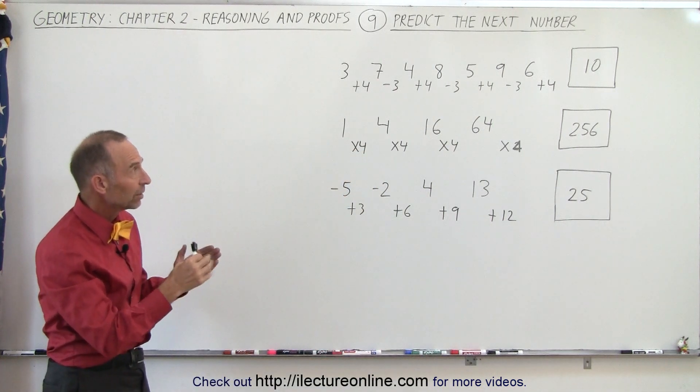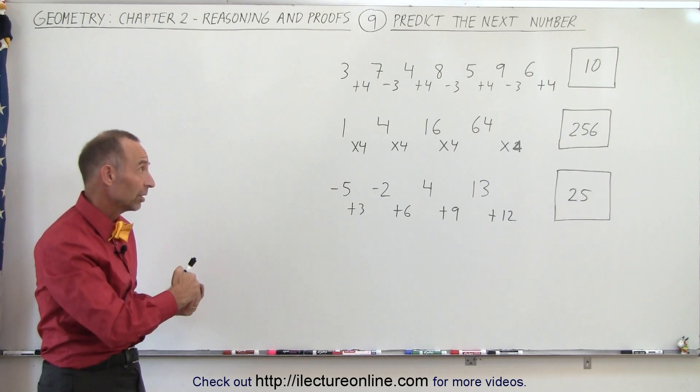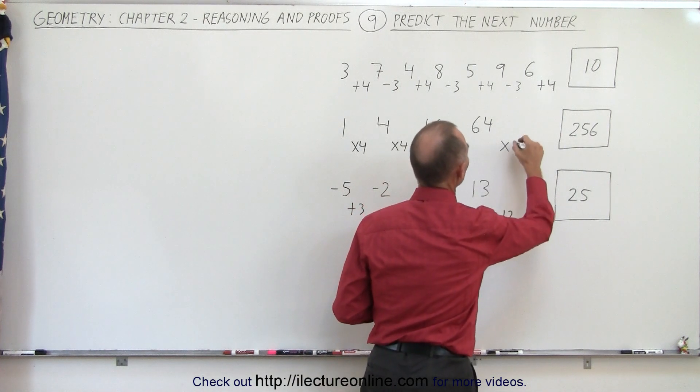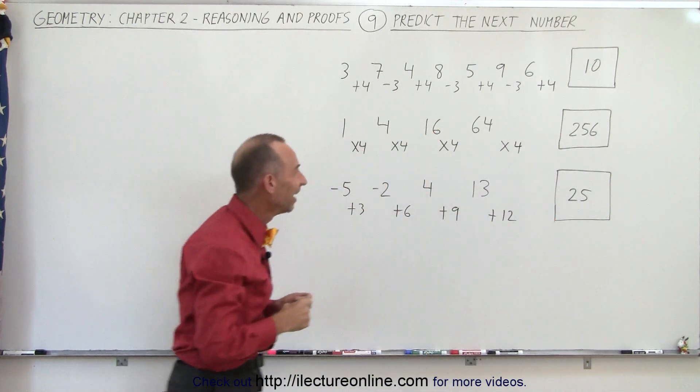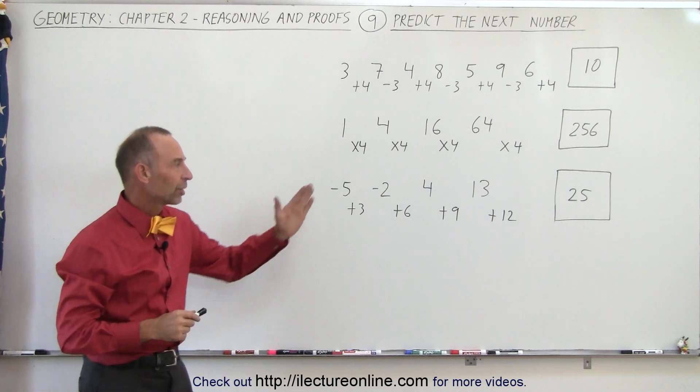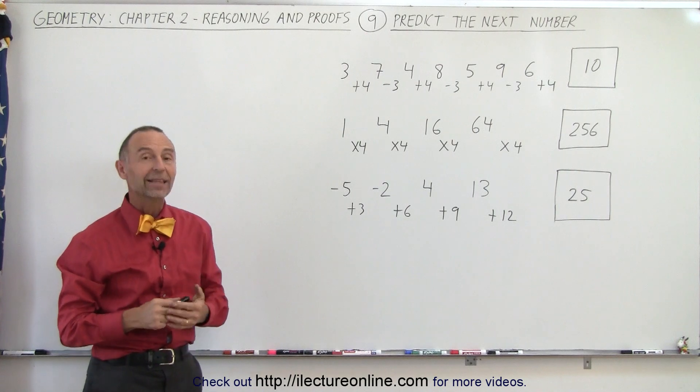So you need to find the pattern in the numbers either by seeing how much is added, how much is subtracted, how much is multiplied. Oh I guess that's not times 2 is it? This is times 4. And so therefore by finding the correct pattern you can then usually predict what the next number will be in the series. And that's how it's done.